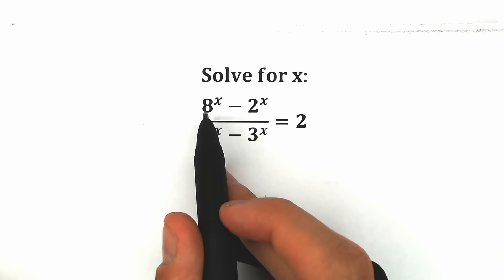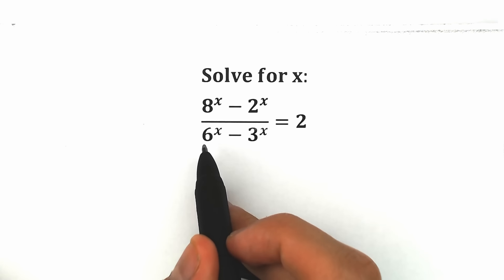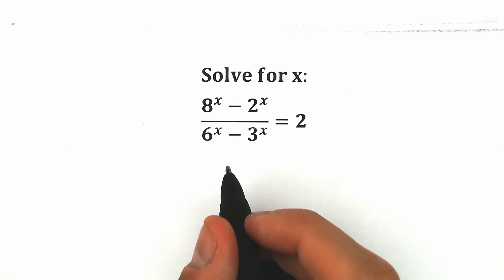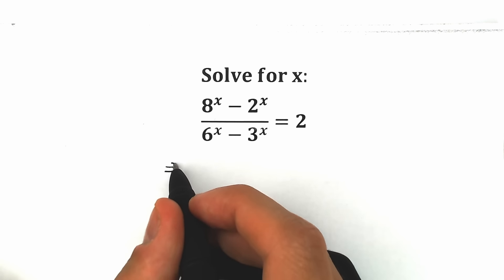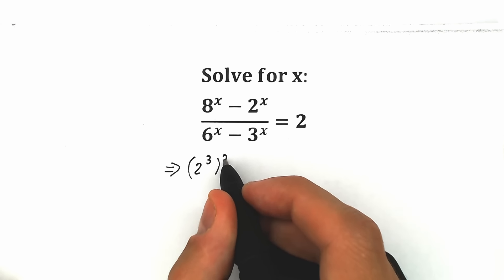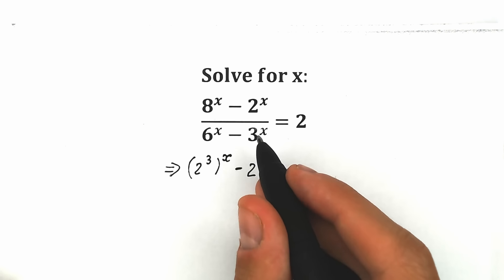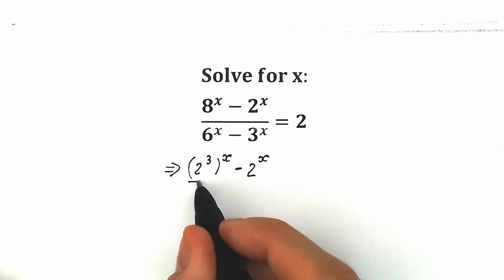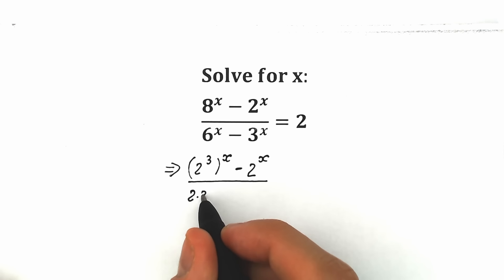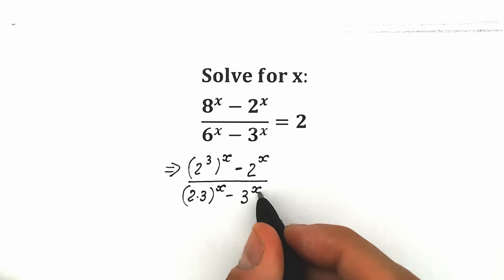First of all, let's express 8 and 6 in another way. We already have 2 and 3 present. This 8 can be written as 2 cubed, and this 6 can be written as 2 times 3. So we get closer to the same bases. We have (2³)^x minus 2^x in the numerator, all over (2×3)^x minus 3^x, equal to 2.